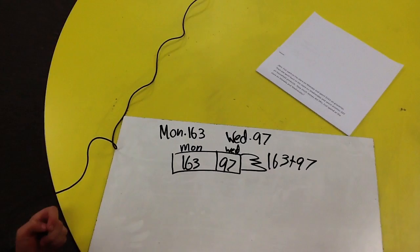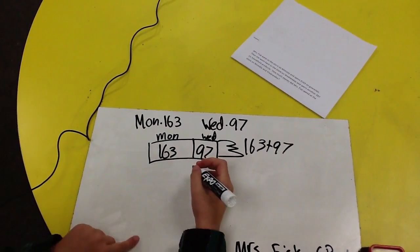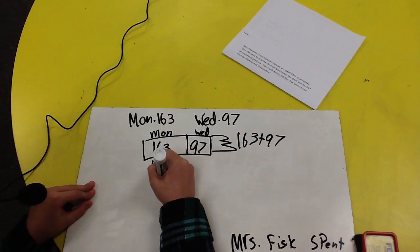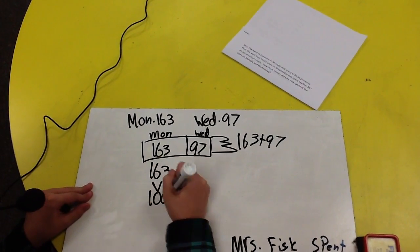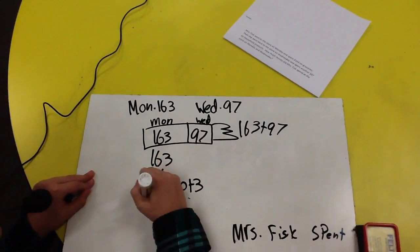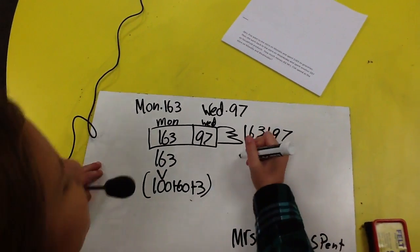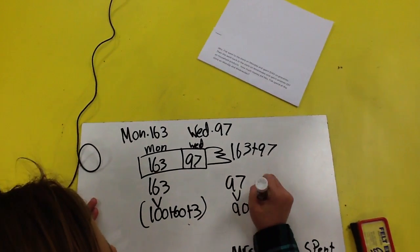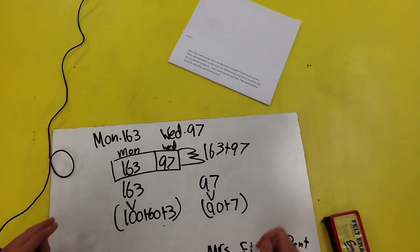Let's decompose this so we can better understand this. $163, well that decomposed is $100 plus $60 plus $3. Put that in a parenthesis. Then $97. That is $90 plus $7. Put that also in a parenthesis.